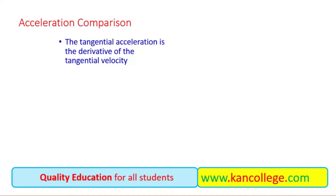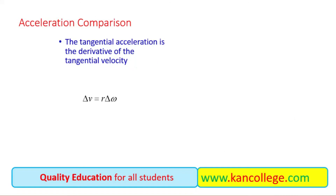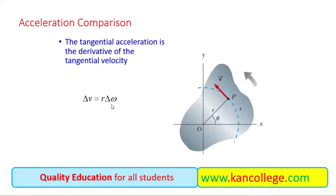Similarly, we can find the linear and angular acceleration relationship. We know that V equals R omega. If the angular speed changes by delta omega, then the linear speed changes by a corresponding delta V. So delta V equals R times delta omega. Dividing both sides by delta T gives delta V over delta T, which is the linear acceleration or tangential acceleration — the rate of change of speed in the tangential direction.